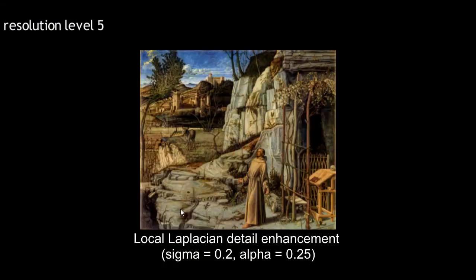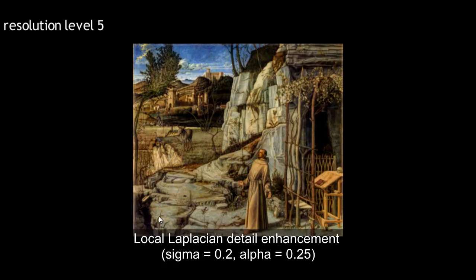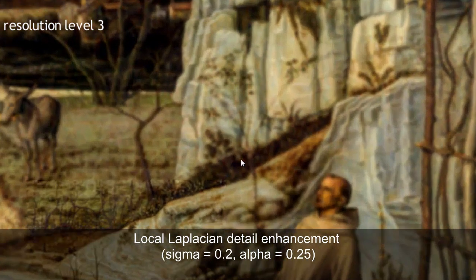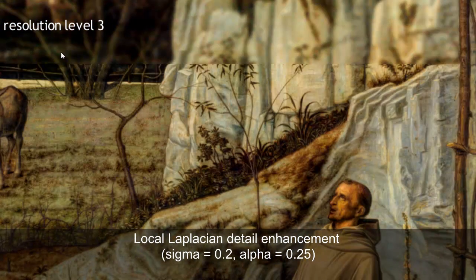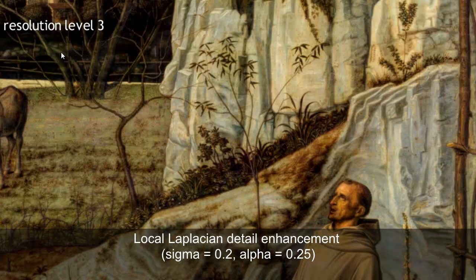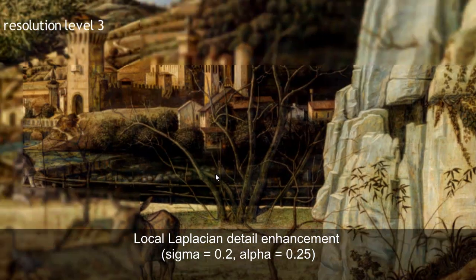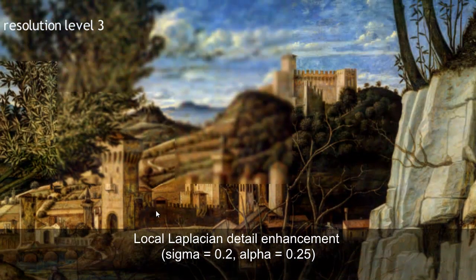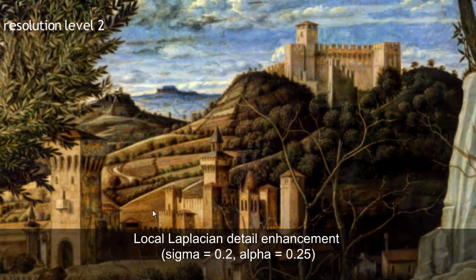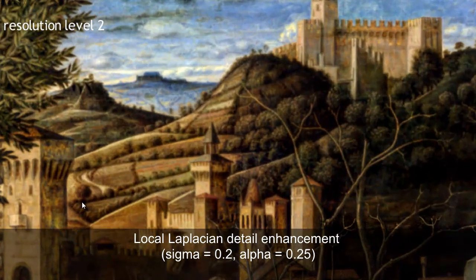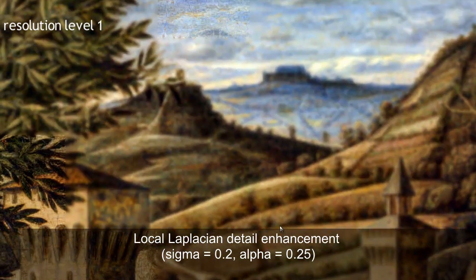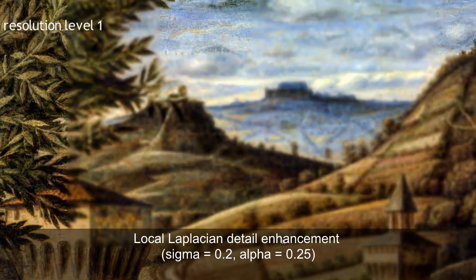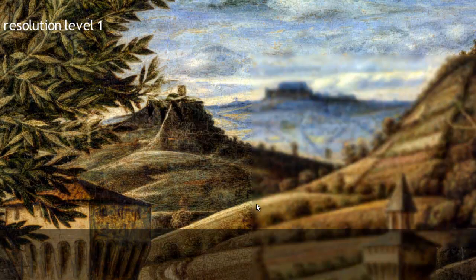Nonlinear operators can be evaluated without accessing higher or lower resolutions. Additionally, the sparsity of sparse PDF maps makes them scalable to gigapixel images. The evaluation of local Laplacian filters becomes scalable by computing each Laplacian pyramid coefficient directly from the information encoded in the sparse PDF map.